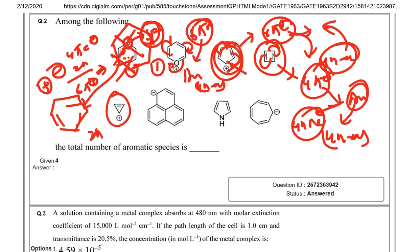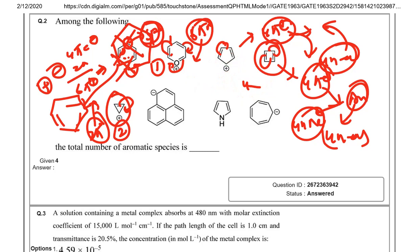The next structure has two pi electrons with the possibility of delocalization with a positive charge, following all of Hückel's rules, so it is aromatic. Many students, by just considering the total electrons as 14, will say the next structure is aromatic, but it is not aromatic.